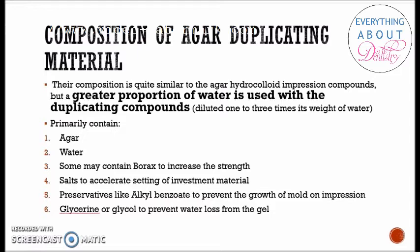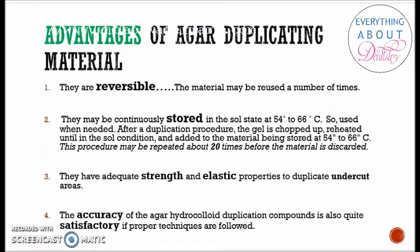The advantages of agar duplicating material are: First, it is reversible, so it can be used a number of times. Second, it may be continuously stored in a sol state at 54 to 66 degrees centigrade and used when needed. Once the agar sets and changes from sol to gel form, the hardened gel can be chopped up, reheated, converted back into sol form, and stored. This storage and re-usage can be done up to 20 times before the material is discarded.